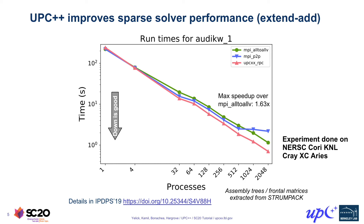On a different machine — the previous results were on the Haswell nodes of the NERSC Cori system; this is on the Knight's Landing processors — you see similar behavior, with even better near-linear scaling of the UPC++ implementation, and an overall speedup of about 1.6x relative to the MPI all-to-all version.